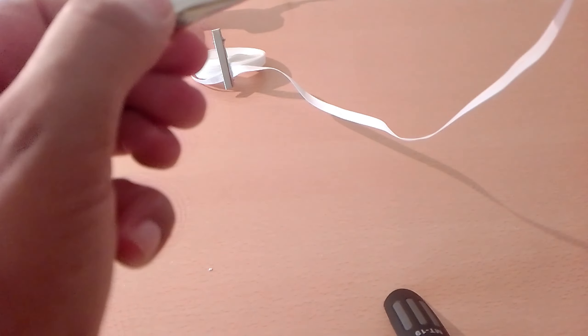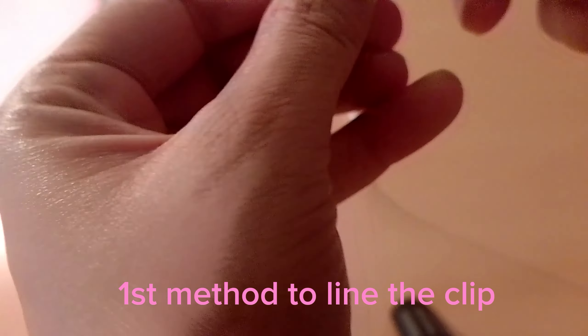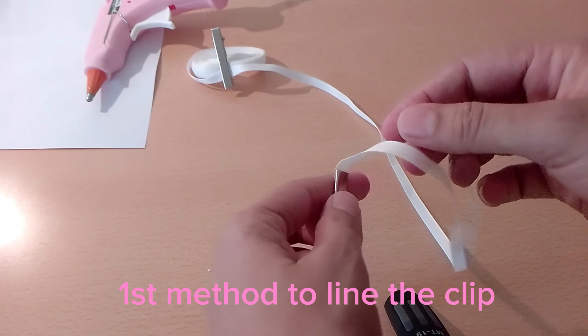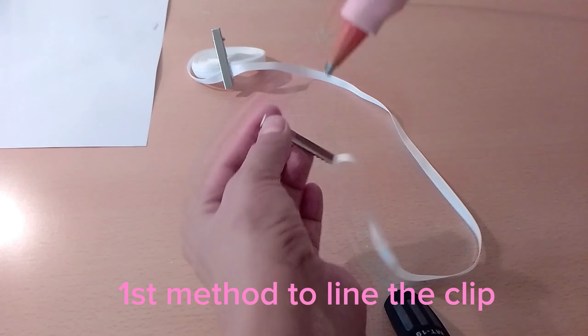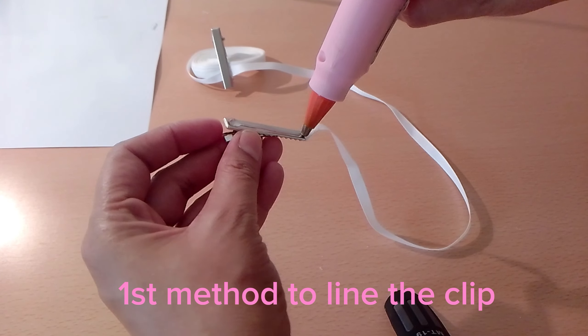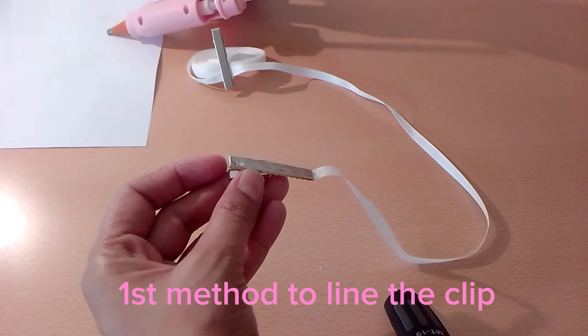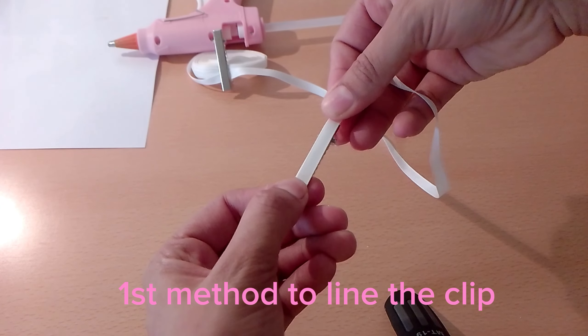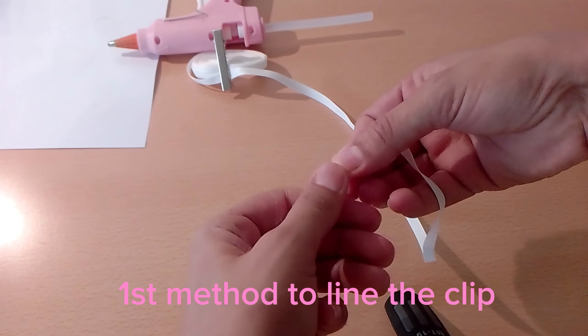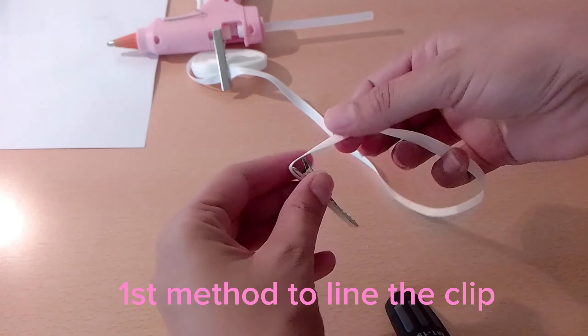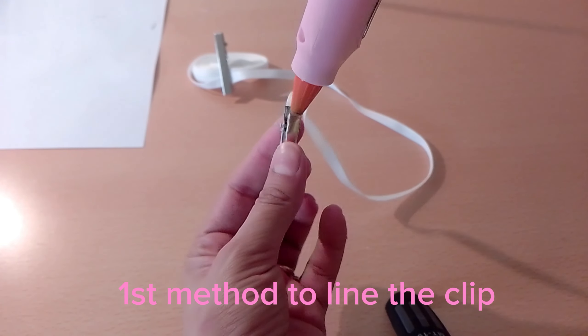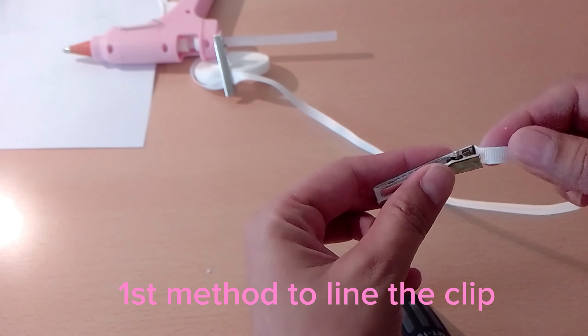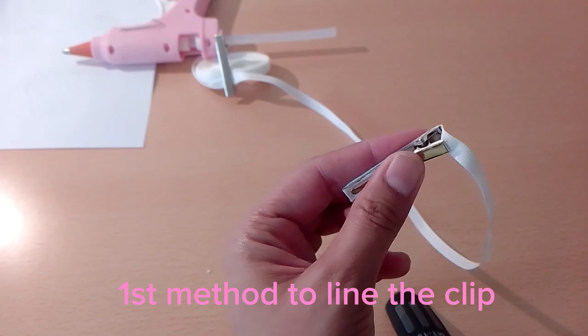We will line it with the ribbon. Here I am using 6 millimeter wide ribbon. There are two methods to line the clip. First one is this one, in this you will need more ribbon. The second one you can save more ribbon. So I am showing here both of the methods to line the alligator clip with the help of ribbon.